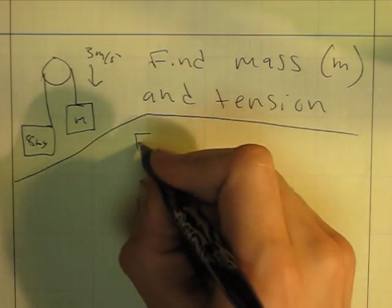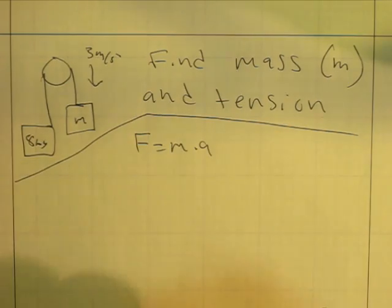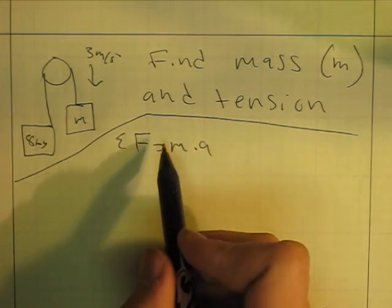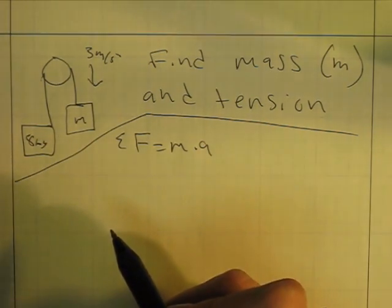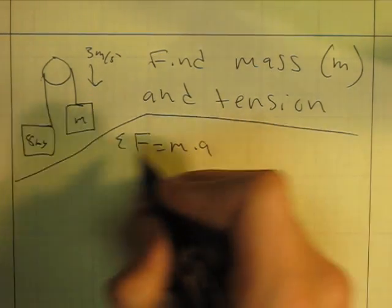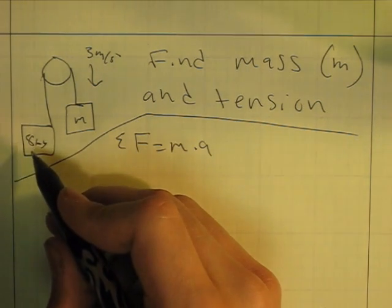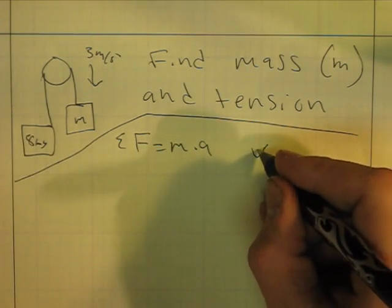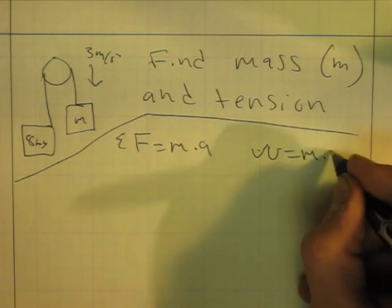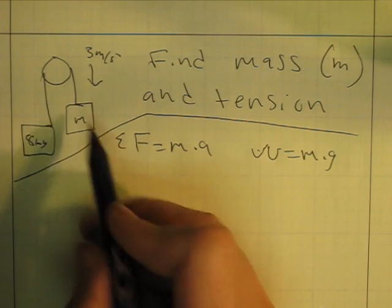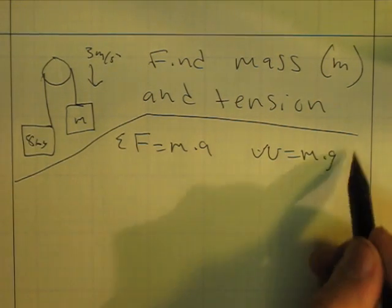So I'm going to use the formula F equals m times a, and this F right here is actually the sum of the forces, so it's going to be both of these forces right here. And these forces are going to be actually in Newtons, so to convert it to Newtons, weight equals mass times gravity. So now I have these weights in terms of forces, in terms of Newtons, which is mass times gravity.